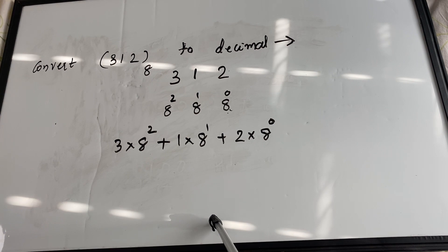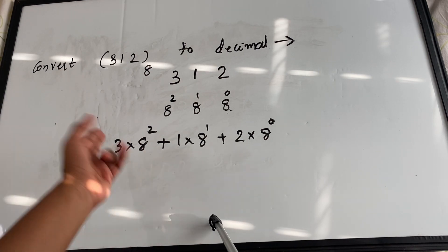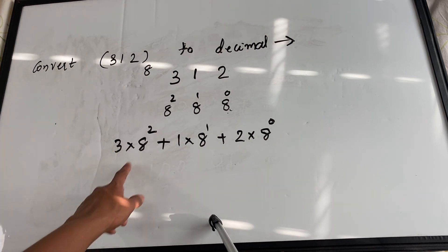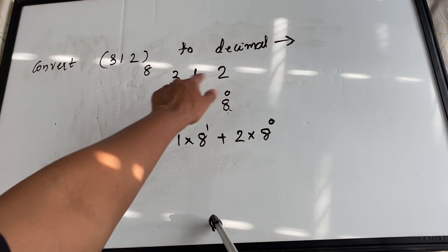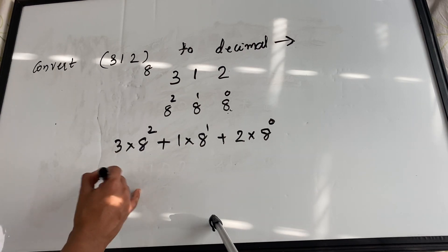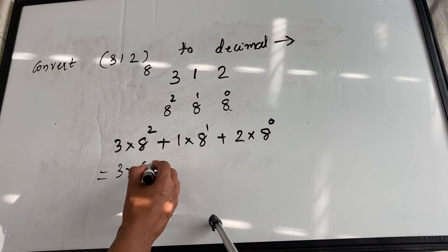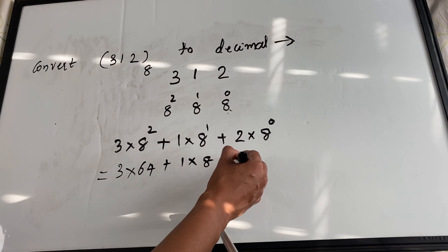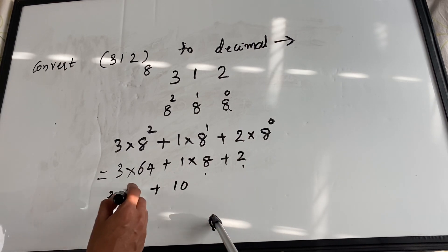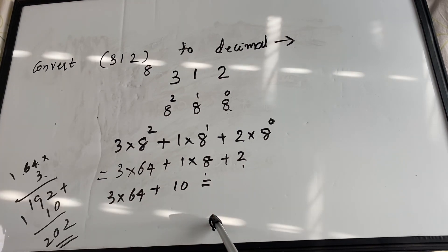Solving the expression: 3 × 64 = 192, 1 × 8 = 8, 2 × 1 = 2, giving 192 + 8 + 2 = 202. So 312 base 8 converts to 202 in decimal. If given options like 201, 202, 203, the answer is 202 base 10. This conversion methodology applies to all number system conversions.